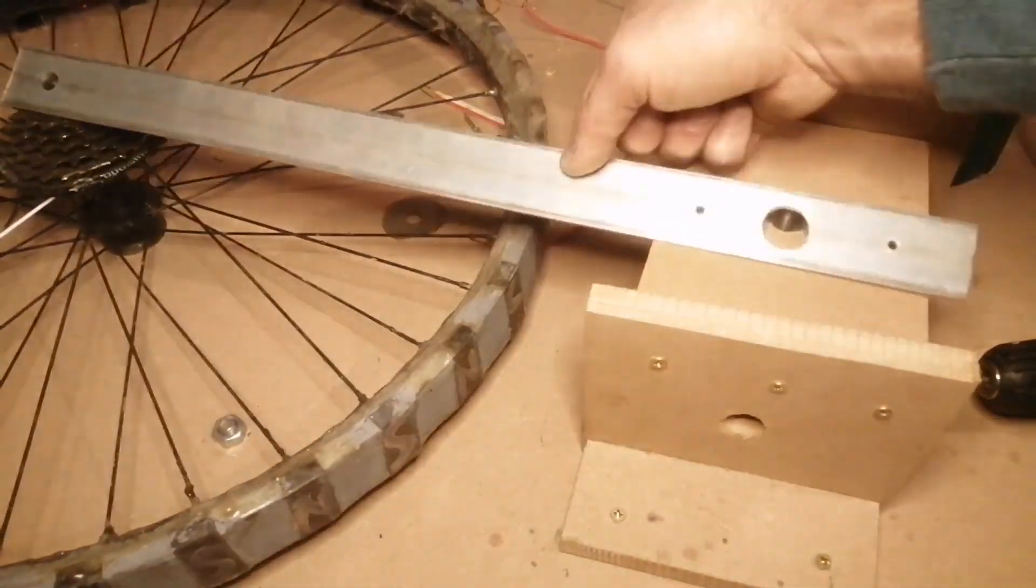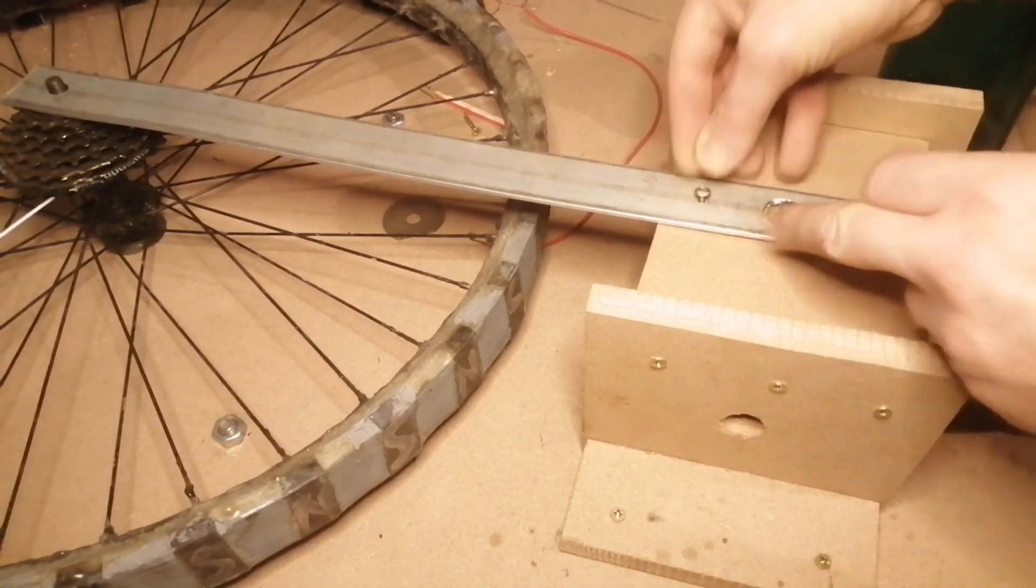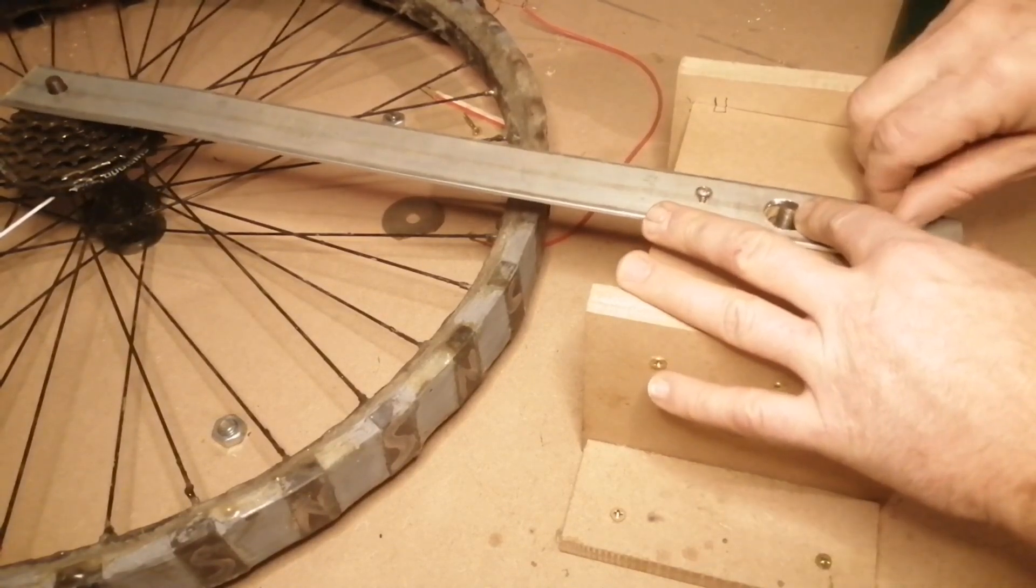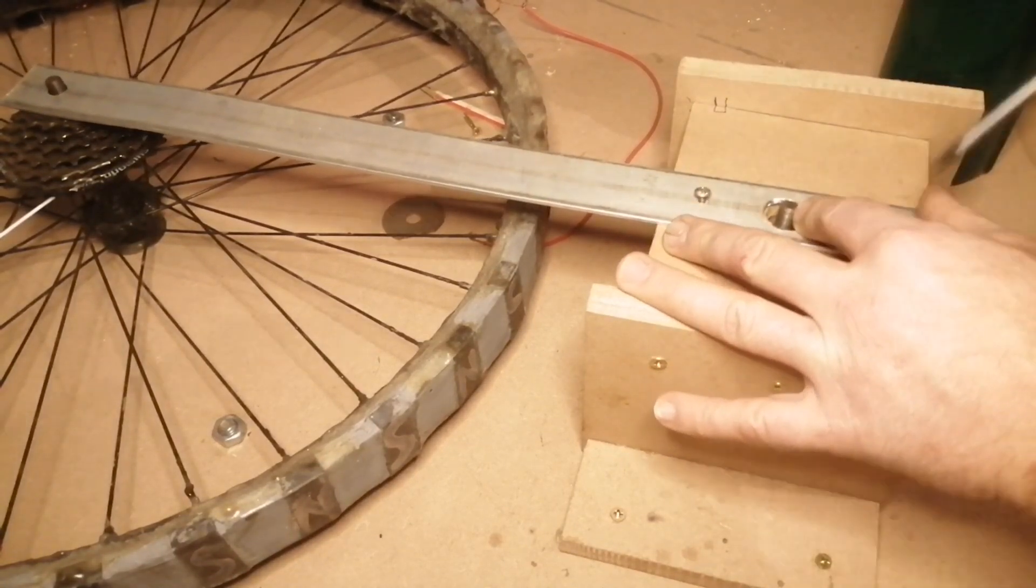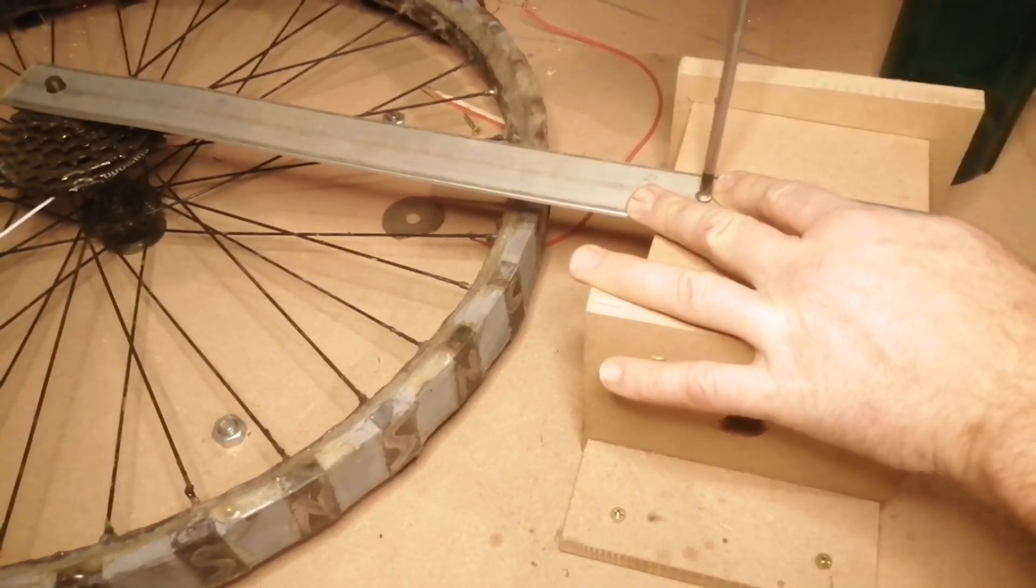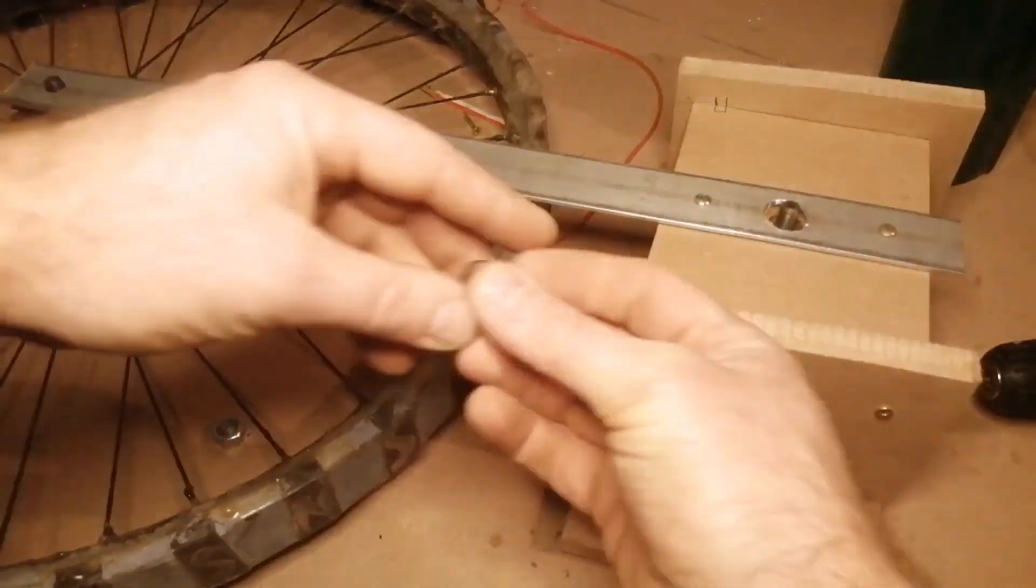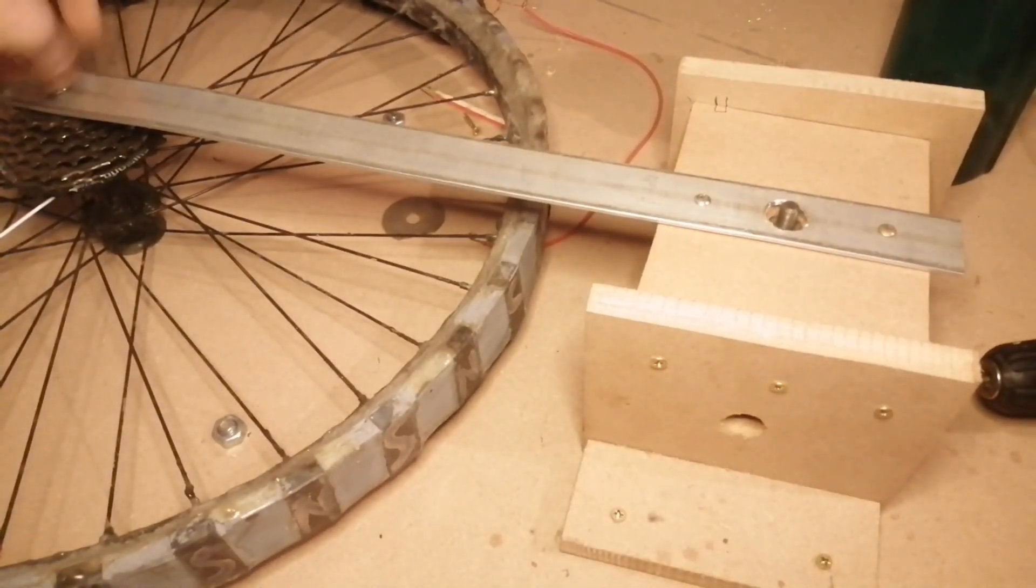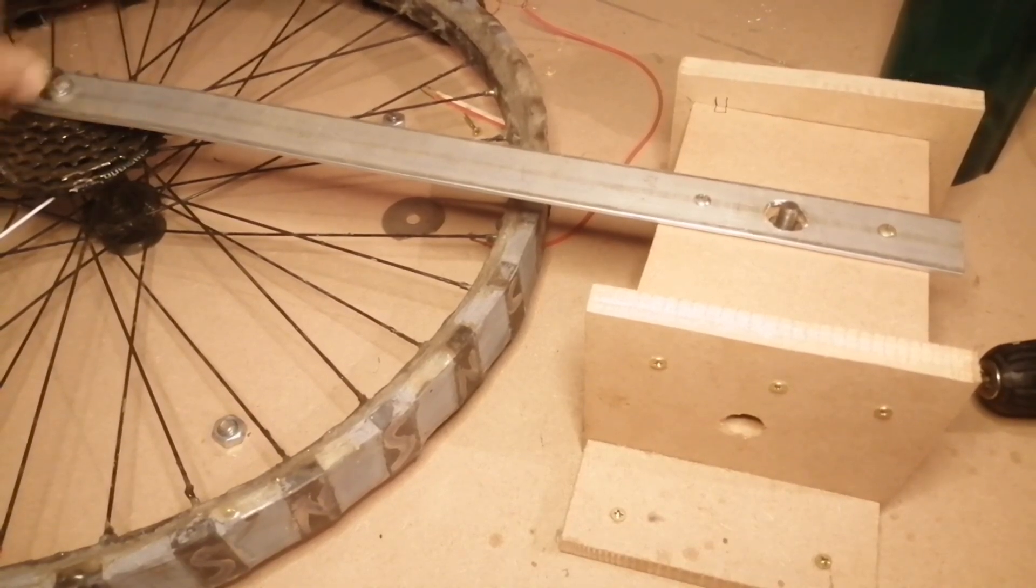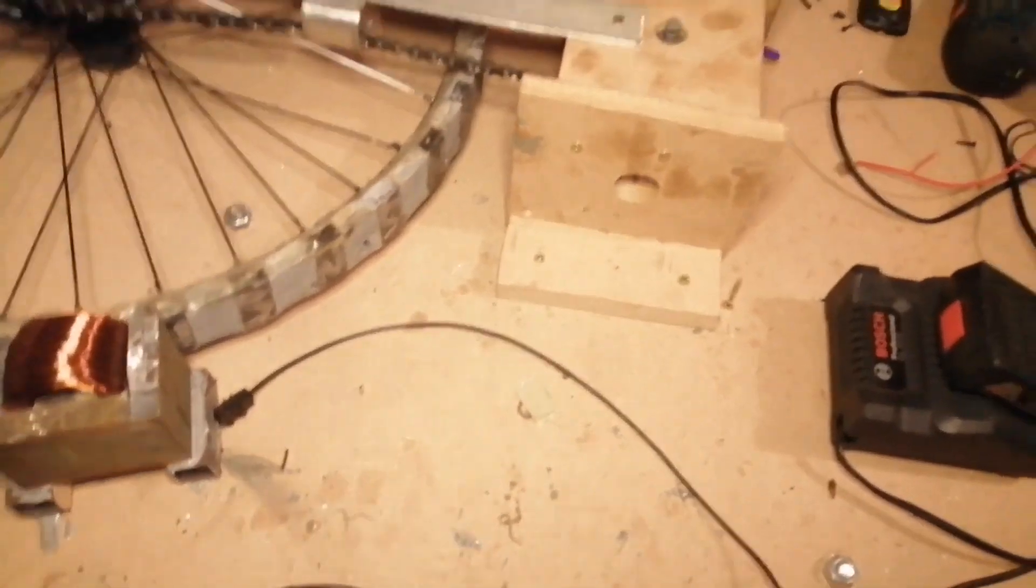I cut a strip of 40x3 aluminum. This is for extra support for the wheel. And then I added a chain, a chain guard, and I connected the wires to a battery charger.